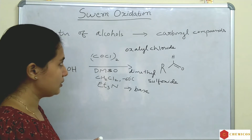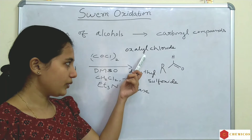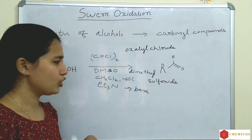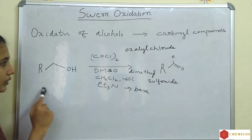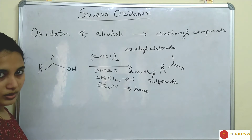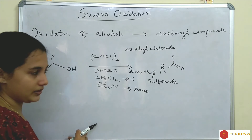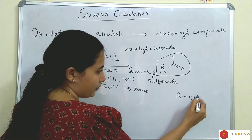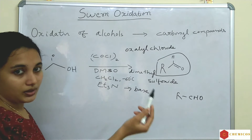Swern Oxidation is the oxidation of alcohols to corresponding carbonyl compounds. Here this is a primary alcohol. When we oxidize a primary alcohol we will get an aldehyde. So the product is R-CHO — this is an aldehyde.